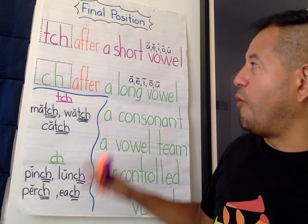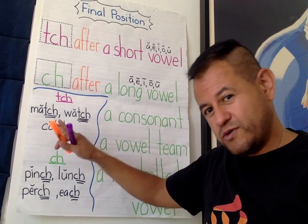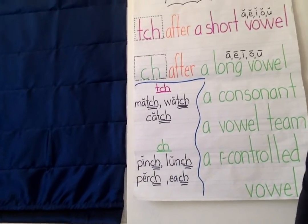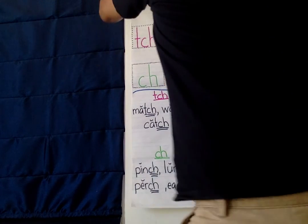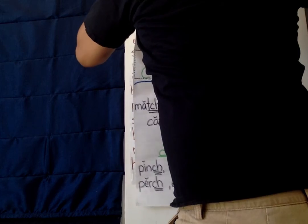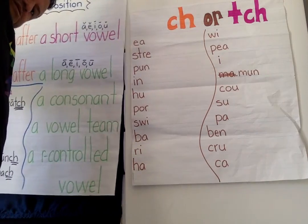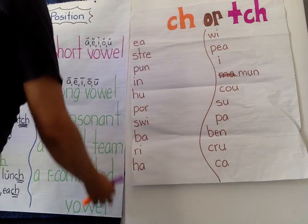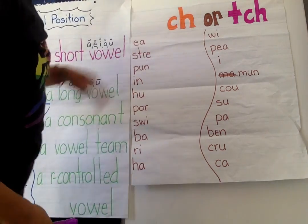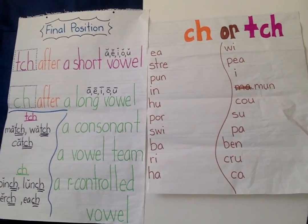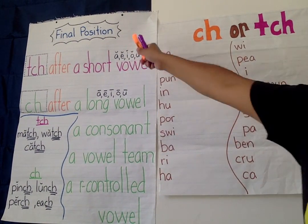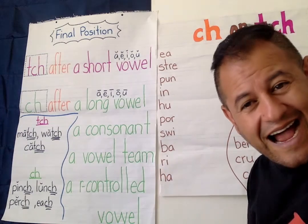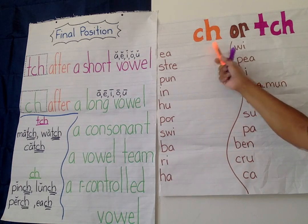So here are our rules. What I'm going to do is move this over and we're going to look at our rules to see what we can fill in with some other words. Here is our sheet, and here are some words we're going to be practicing. Here are our rules on one side, and we have the beginning parts of our words here. We're going to look at the beginning parts and decide: are we going to add C-H or T-C-H?